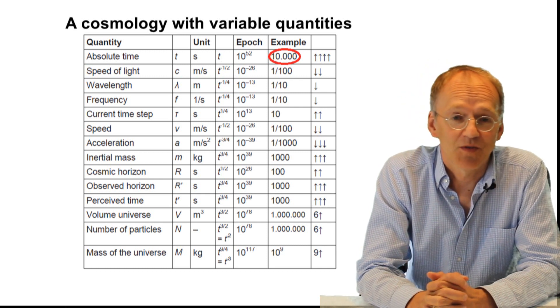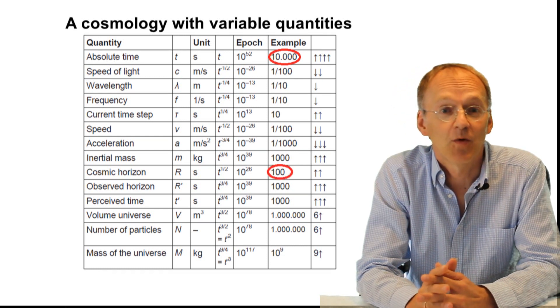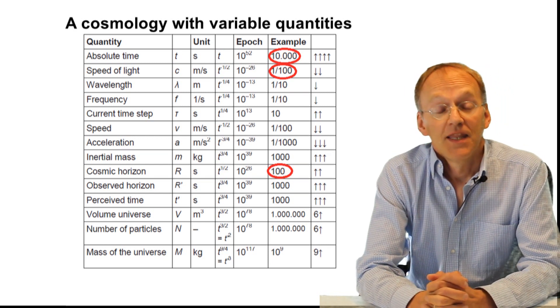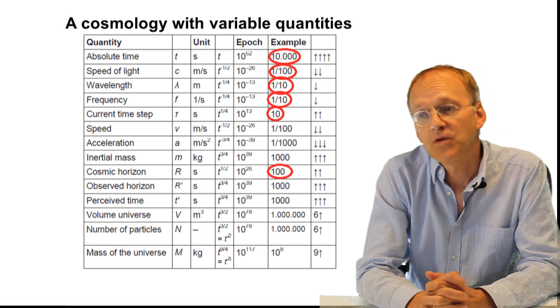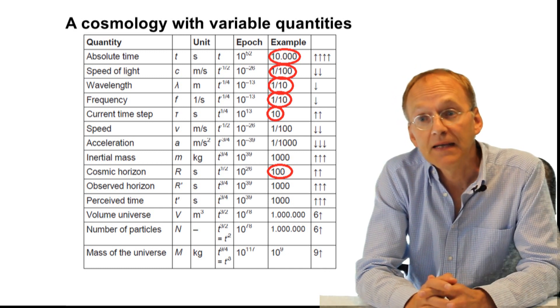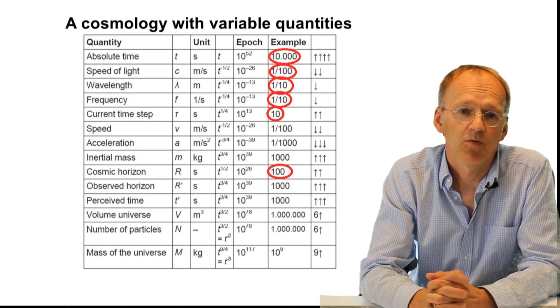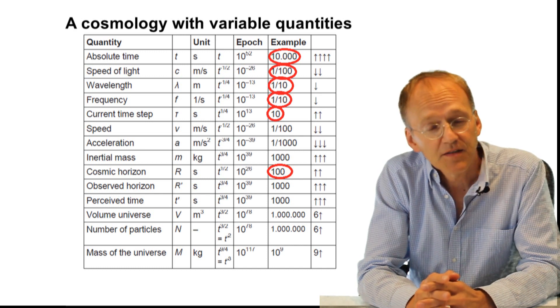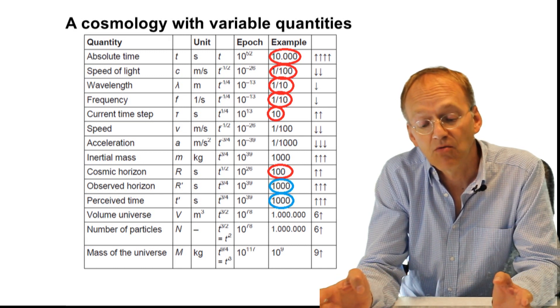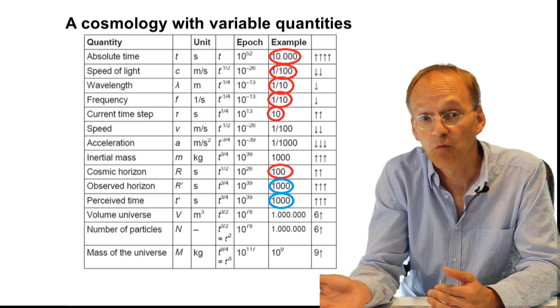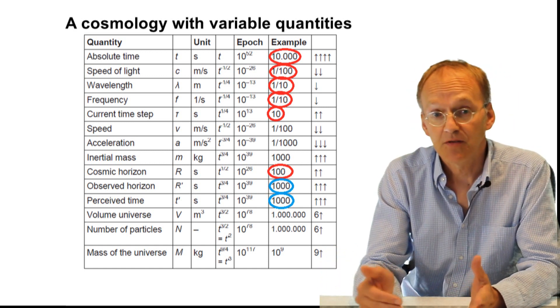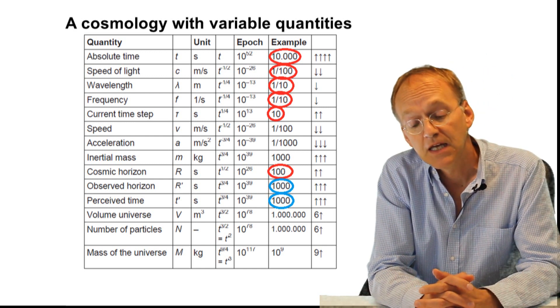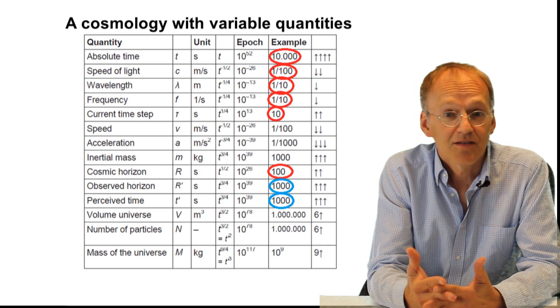The size of the cosmos, which is proportional to the square root of absolute time, would be 100, while the speed of light has decreased to 1/100 of its original value. That means that both wavelength and frequencies would have decreased to one tenth, while the time step, being the inverse of the frequency, would have grown tenfold. So if you measure the actual size of the cosmos, which is 100, but your measuring rod has shrunk to one tenth, you end up with the result one thousand. And the same thing with time: because absolute time 10,000 measured with a tenfold increased time step gives the result one thousand, conveying the seemingly constant speed of light.